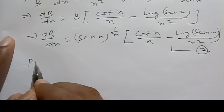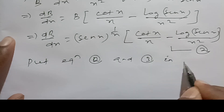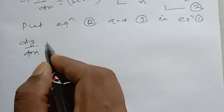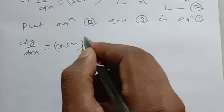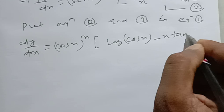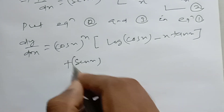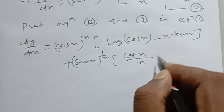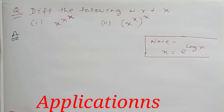Putting both results into equation 1: dy/dx = cos x to the power x · (log cos x − x tan x) + sin x to the power 1/x · (cot x / x − log sin x / x²). This is the answer.